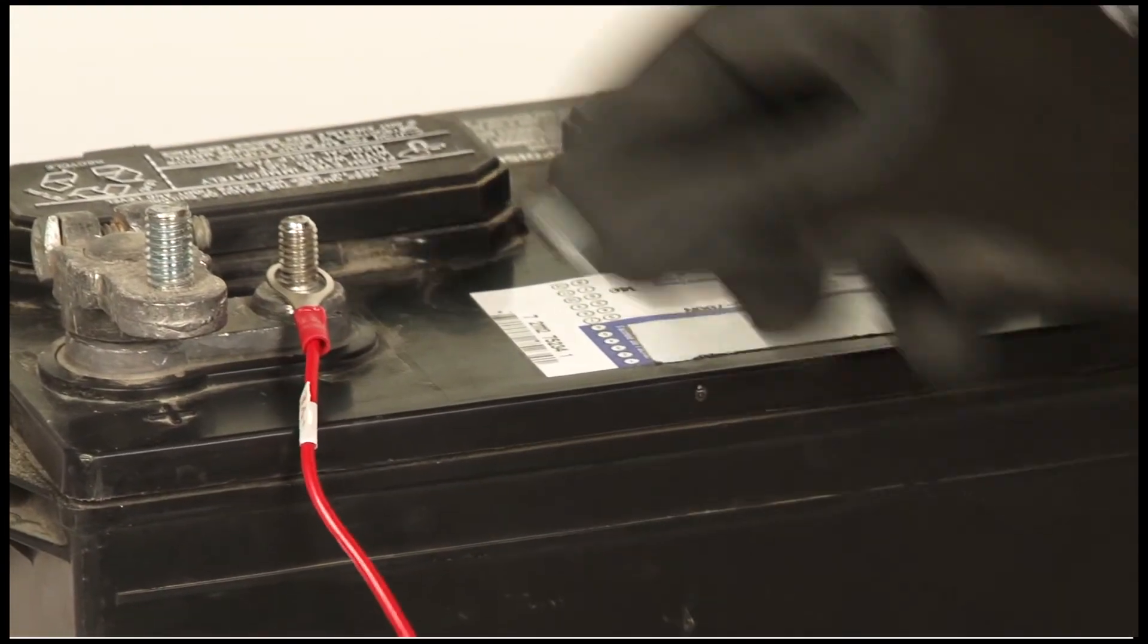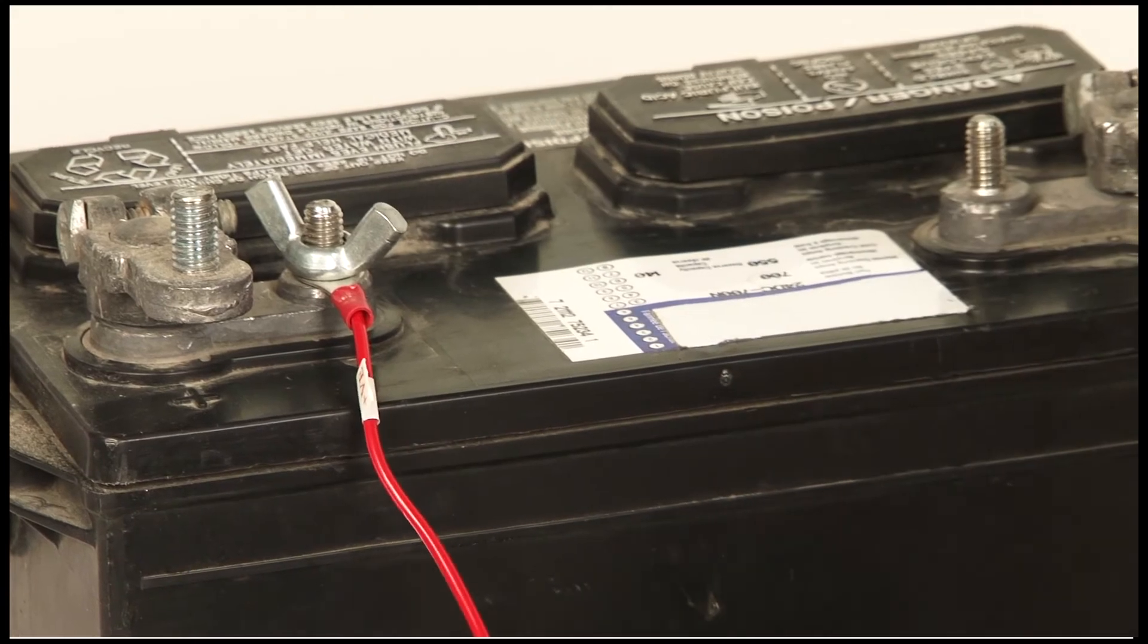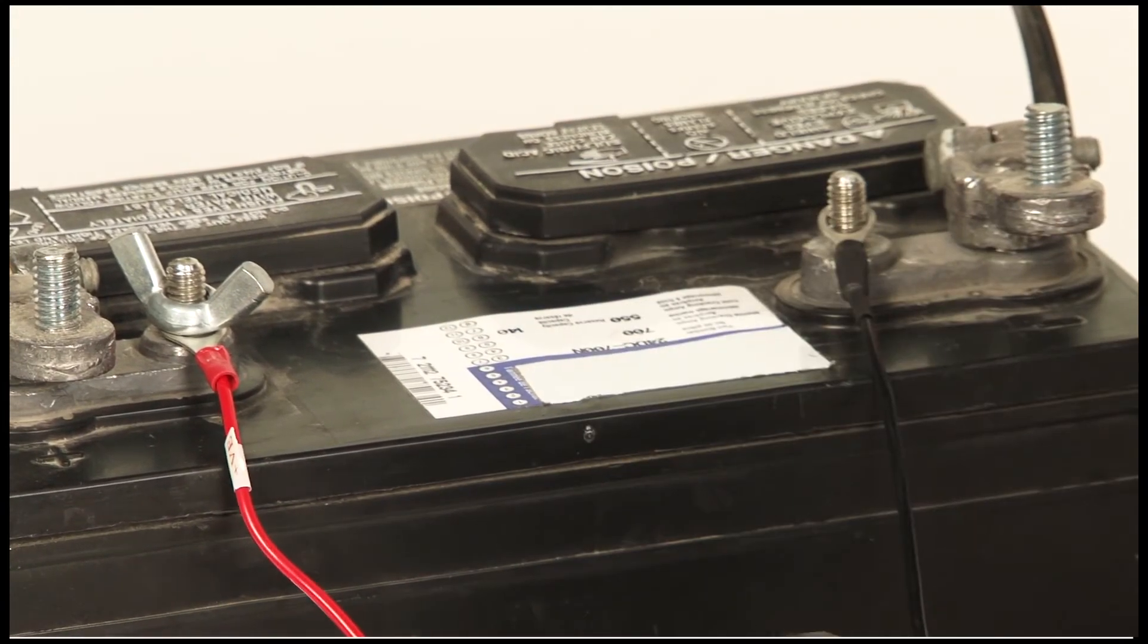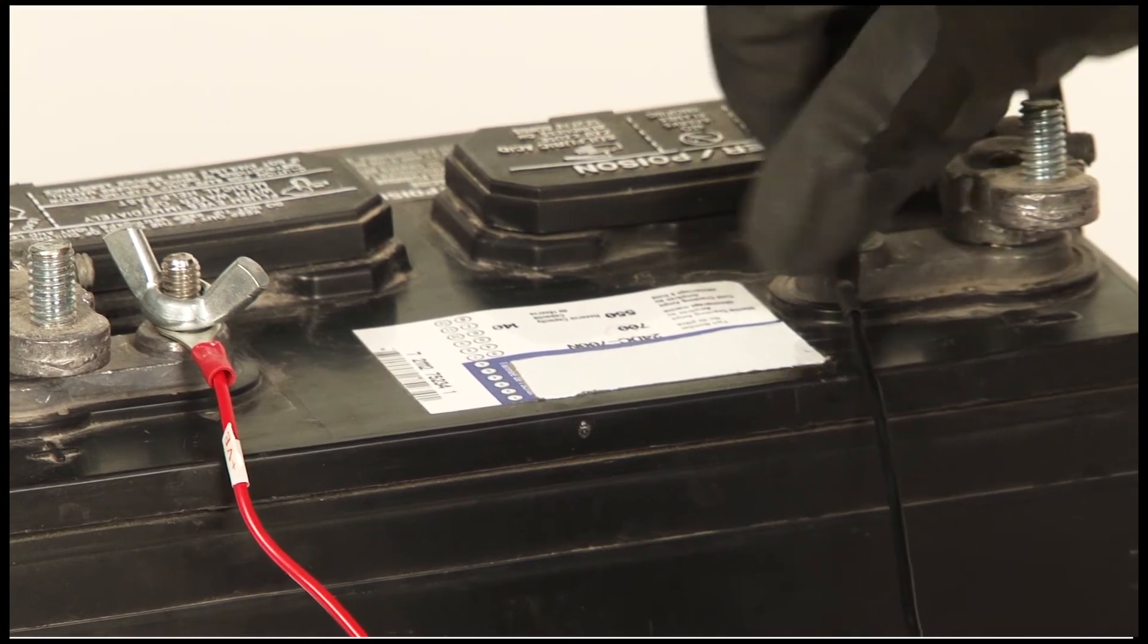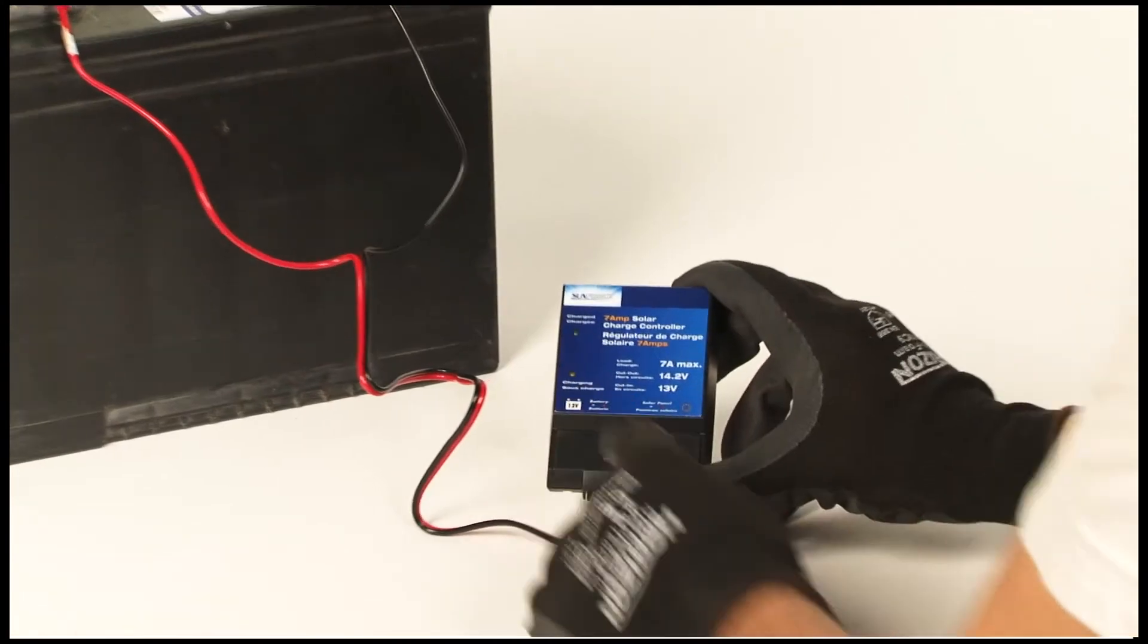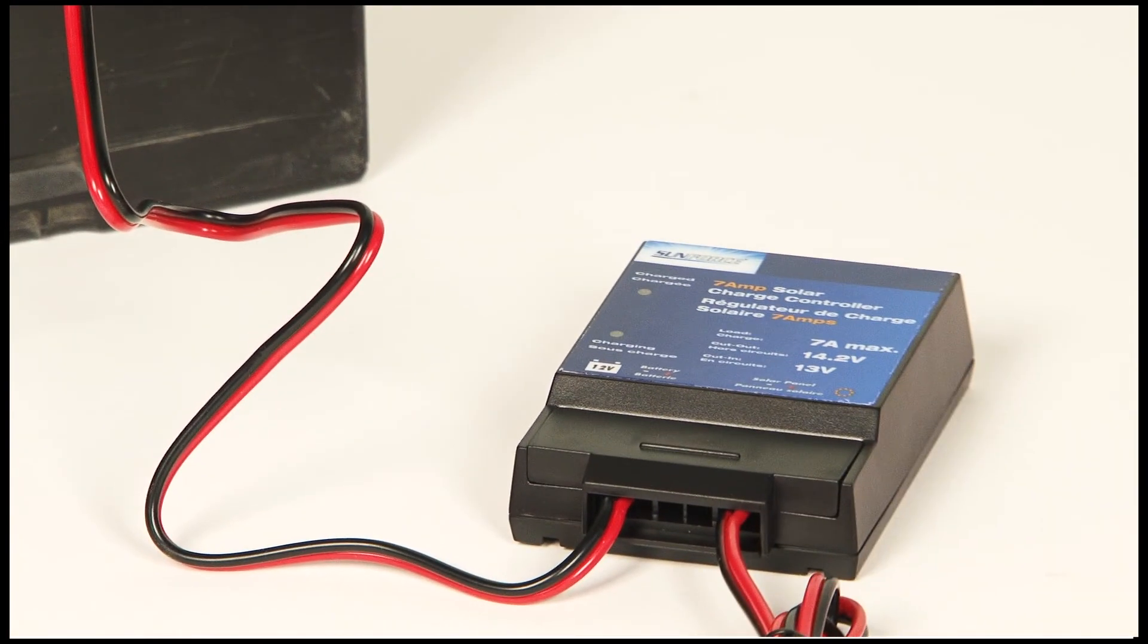You are now able to connect the 7-amp charge controller to the 12-volt battery, which is not included in this kit. The positive red wire hooks over the positive terminal of the 12-volt battery. Repeat this step for the negative black wire. The amber LED on the 7-amp controller should now illuminate to indicate charging. A green LED on the controller will indicate a fully charged battery.